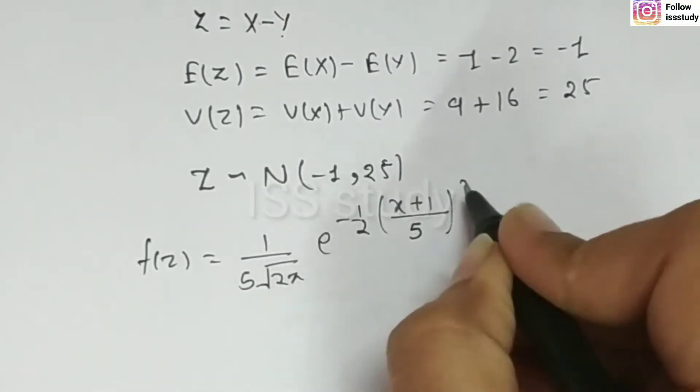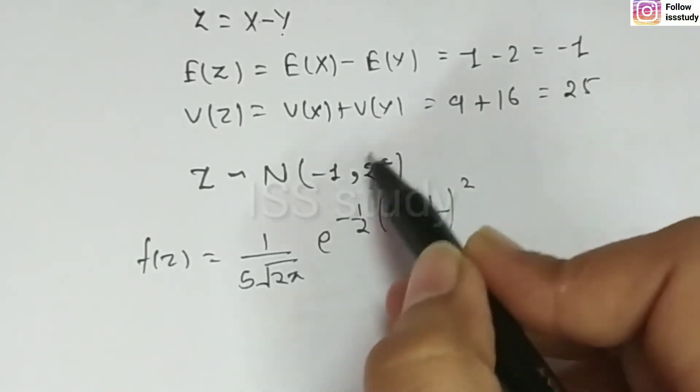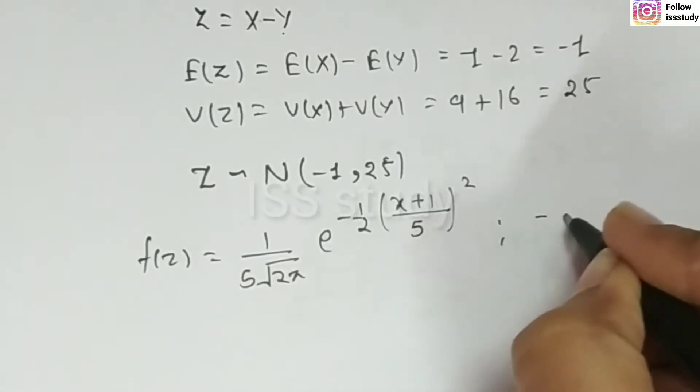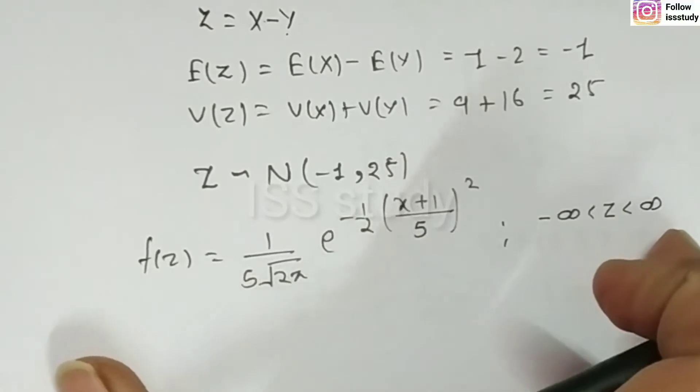Then, what will come here? Now, what will come here? Because this is the variance sigma, then sigma will become 5. And, this is the random variable z. So, its range will be minus infinite and plus infinite. So, this will be done.